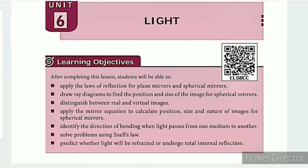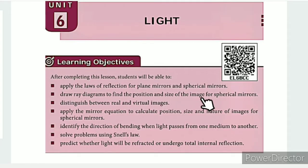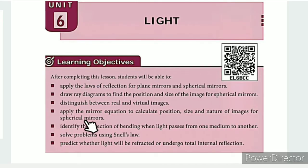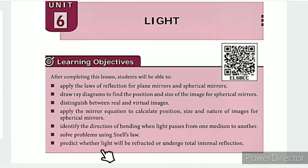Reflection of Light. In this lesson, the learning objectives are: apply the laws of reflection for plane mirrors and spherical mirrors; draw ray diagrams to find the position and size of image for spherical mirrors; distinguish between real and virtual images; apply the mirror equation to calculate position, size, and nature of images for spherical mirrors; identify the direction of bending when light passes from one medium to another; solve problems using Snell's law; predict whether light will be refracted or undergo total internal reflection.